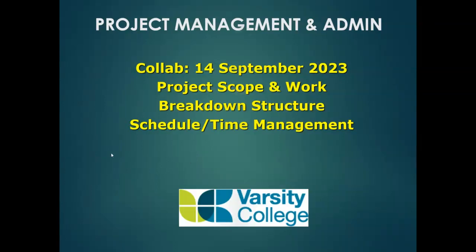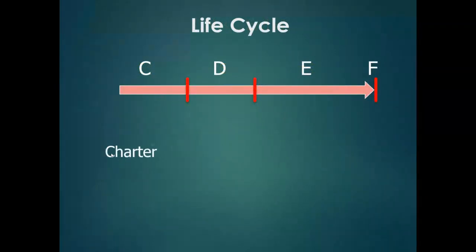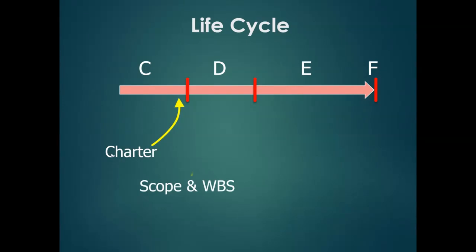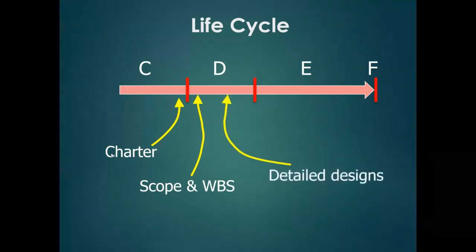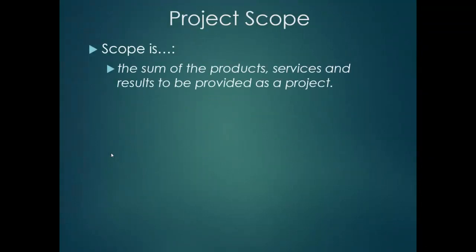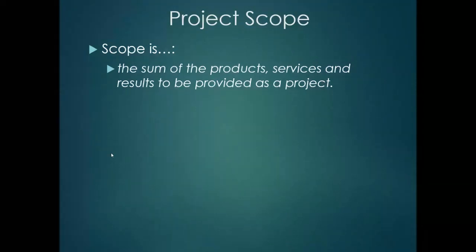Just a reminder of where we are. We've spoken about the project charter being done at the end of the project concept stage. That arrow represents the life cycle of the project — you've got four phases: concept, design, execute, and finish. The charter comes at the end of the concept stage, and then early on in the design phase you put together the scope and do a work breakdown structure.